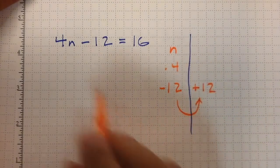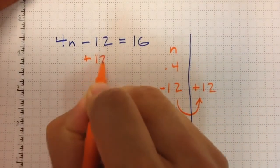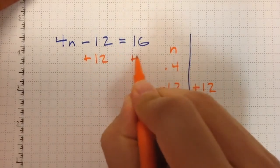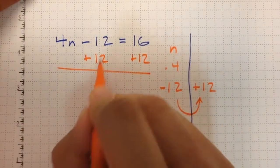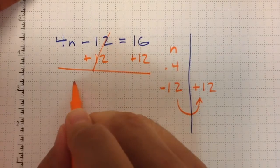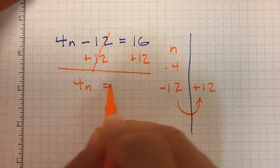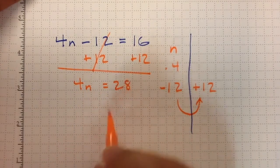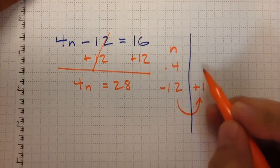We're going to use the addition property of equality to add 12 to one side. What I do to one side of the equal sign, I do to the other. These purposely cancel out, and here we get 28.